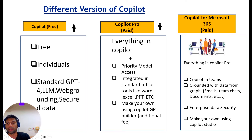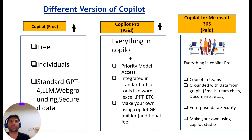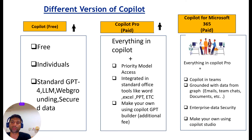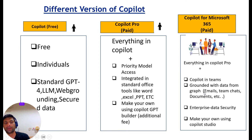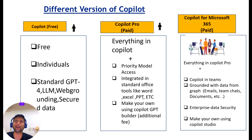Along with that, you get Copilot in Teams, grounded with data from Microsoft Graph, enterprise data security, and the ability to make your own using Copilot Studio. When it comes to Copilot in Teams, after conducting a Teams session you can ask Copilot to give you the agenda of the meeting and what the discussion was about. This video series is focused on Copilot for Microsoft 365 — so going forward, we will be making videos on that, starting from Word, Excel, and everything, showing how Copilot can help simplify our day-to-day tasks.